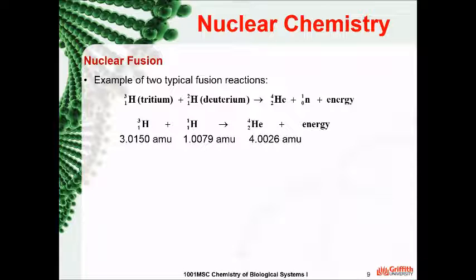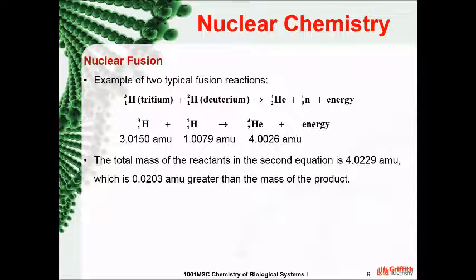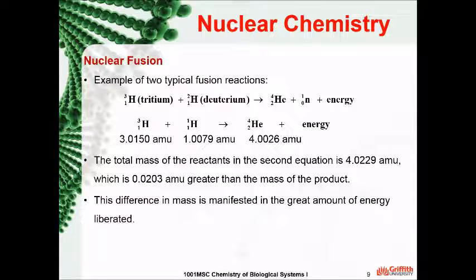The tritium isotope has a mass of 3.015 AMU, and hydrogen has a mass of 1.0079 AMU. When they join together they produce the helium nucleus, which has a mass of 4.0026 AMU. The total mass of the reactants is 4.0229 AMU, which is 0.0203 AMU greater than the mass of the product. The difference in mass is manifested in the great deal of energy liberated.